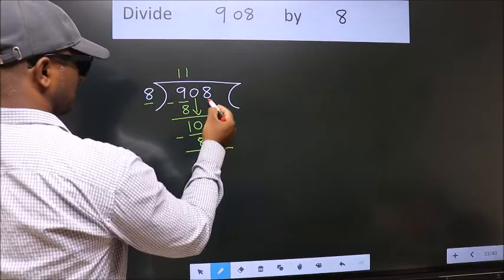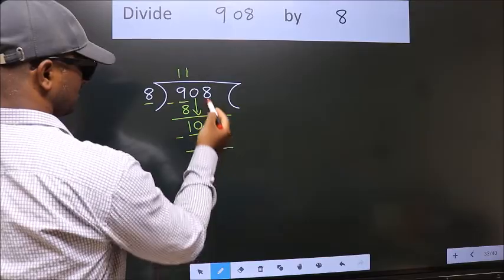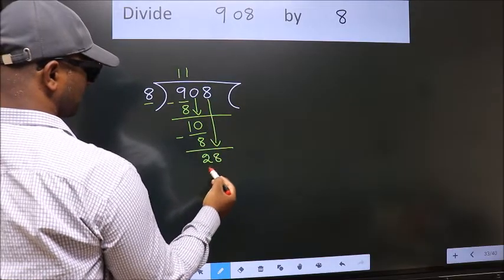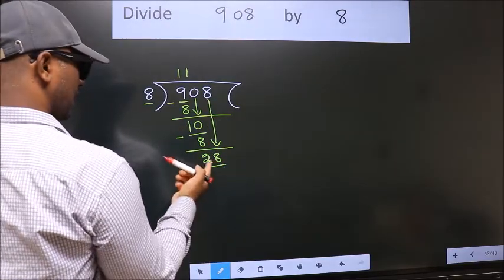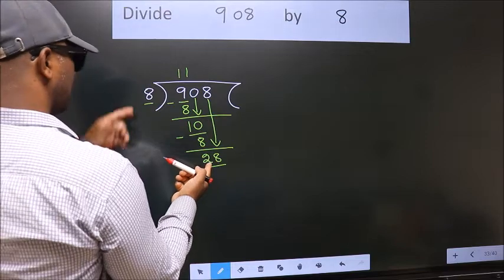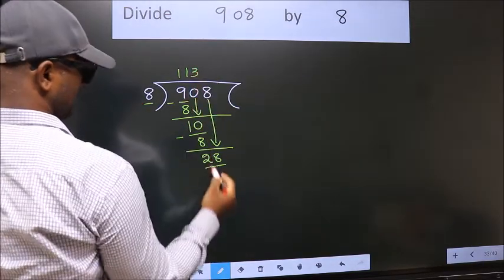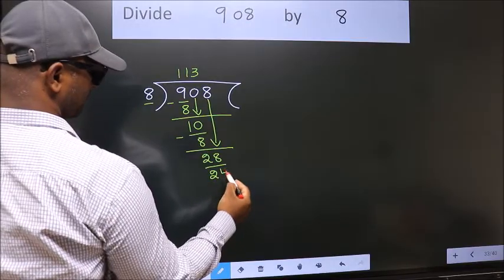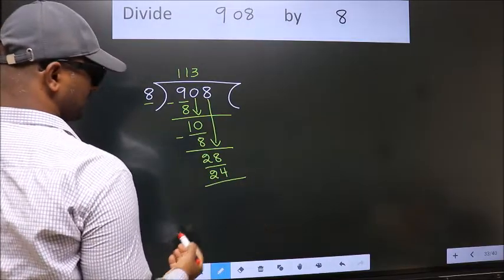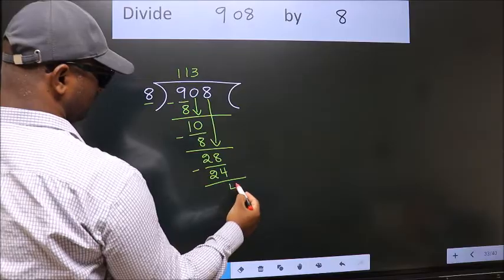After this, bring down the beside number. So, 8 down. So, 28. A number close to 28 in 8 table is 8 threes, 24. Now, we subtract. We get 4.